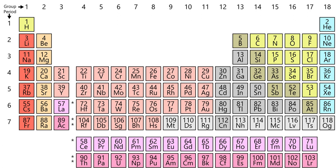Physically, nonmetals largely exist as diatomic or monatomic gases, with the remainder having more substantial, open-packed forms, unlike metals which are nearly all solid and close-packed. If solid, they have a submetallic appearance with the exception of sulfur, and are mostly brittle, as opposed to metals which are lustrous and generally ductile or malleable. They usually have lower densities than metals, are mostly poorer conductors of heat and electricity, and tend to have significantly lower melting and boiling points than those of metals.